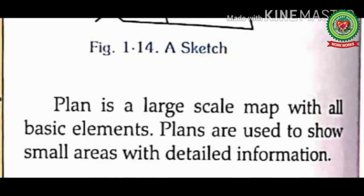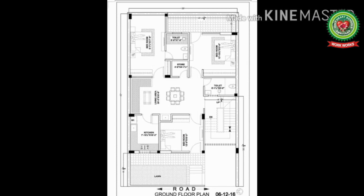Next we have plan. Plan means blueprint of an area made as per a scale — it is an accurate method. Plan is a large scale map with all basic elements. Here large scale map means a map which shows small area with great detail, and elements means components. Plans are used to show small areas with detailed information. In simple words, plan shows all minor details of a particular place. This picture of a house plan is drawn with the help of a scale. It shows small area with great detail and is an accurate representation of an area.